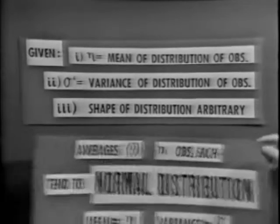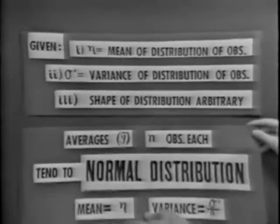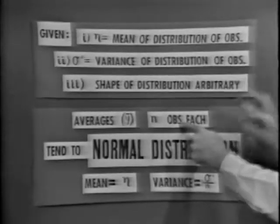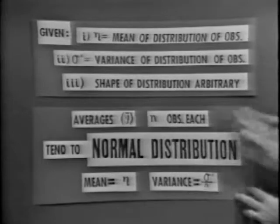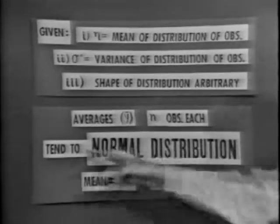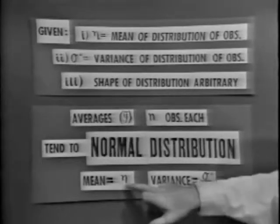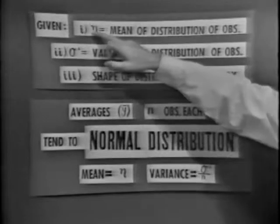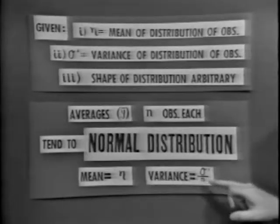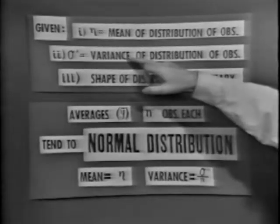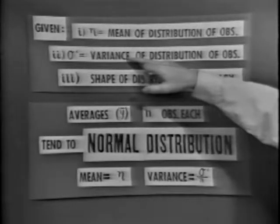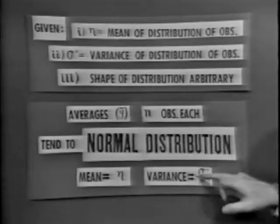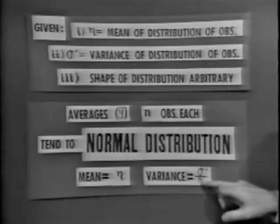It turns out that if we compute averages based on n observations each drawn from this distribution, these averages tend to have a normal distribution with the same mean. That normal will have the same mean as the mean of the parent observations. But its variance will be the variance of the parent distribution divided down by n. The variance of this normal will be sigma squared divided down by n.